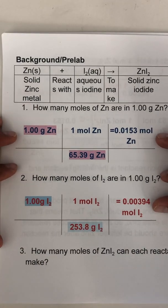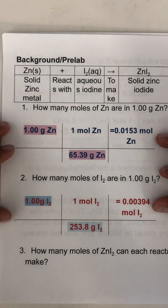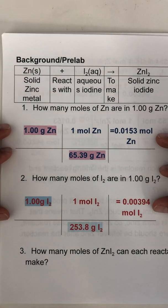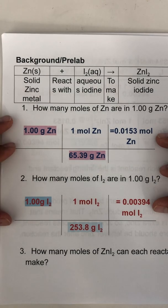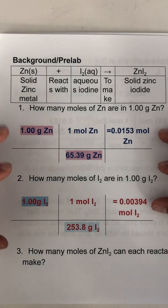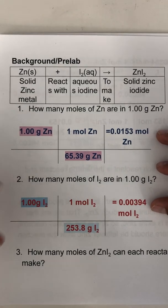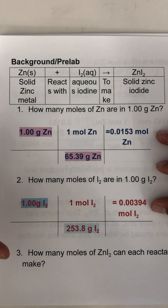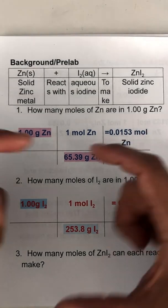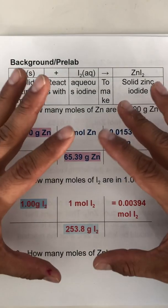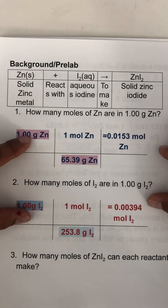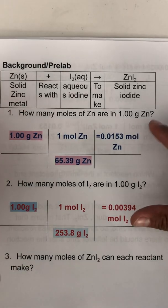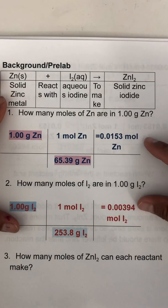The reason why we did this is if I were to ask you to make s'mores and I said here's a pound of chocolate and a pound of marshmallows and a pound of graham crackers, how many s'mores can you make? Well, you don't really know. But if you knew how many marshmallows that is and how many squares of chocolate and how many squares of graham crackers you have, then you can figure out how many you can make. Same thing with chemistry. We got to go from mass to number of particles, and then we can figure out how many s'mores we can make.